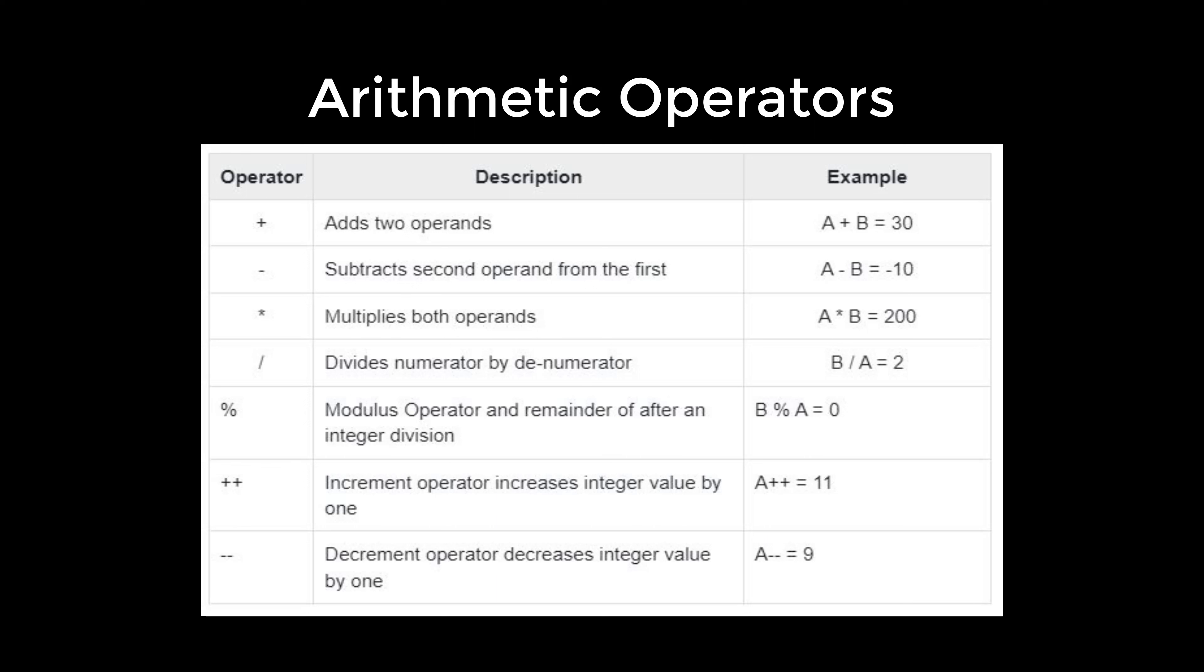So here in the example, A plus B equals 30 because A is 10 and variable B is 20, that is why 30. For subtraction, it is negative 10, and so on and so forth.